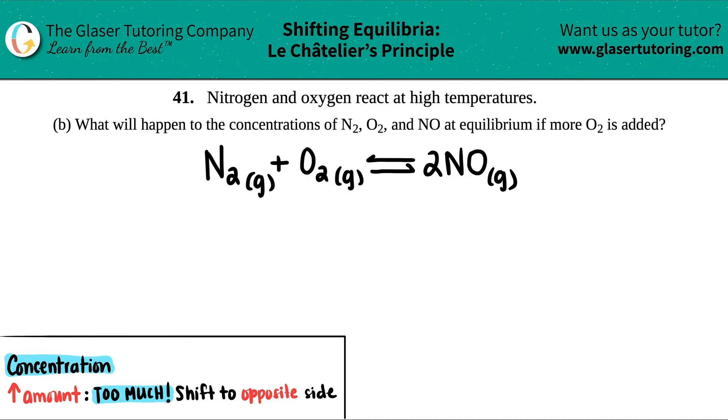Number 41. Nitrogen and oxygen react at high temperatures. Then we have letter B. It says what will happen to the concentrations of N2, O2, and NO at equilibrium if more O2 is added?